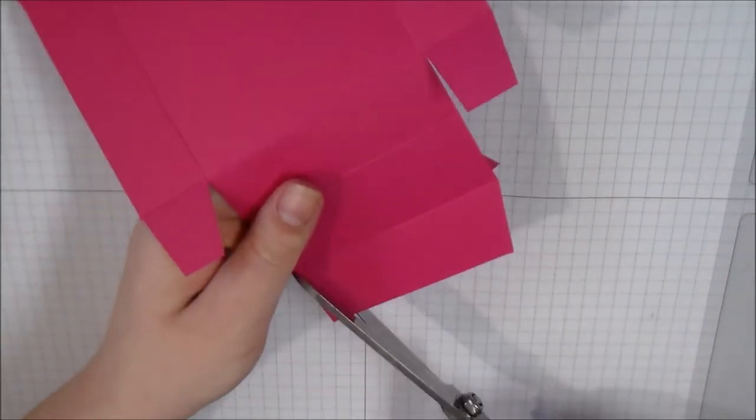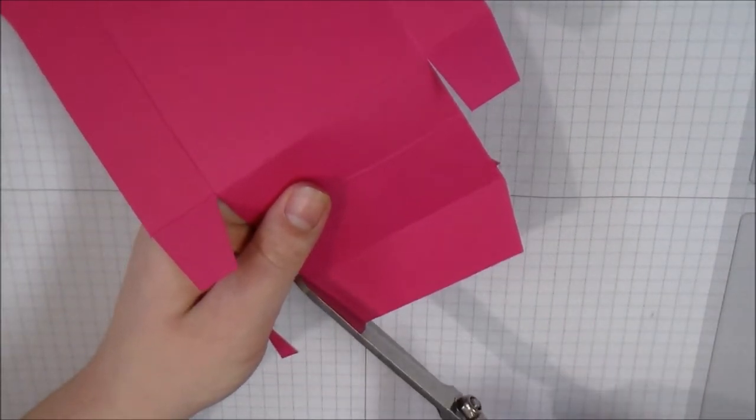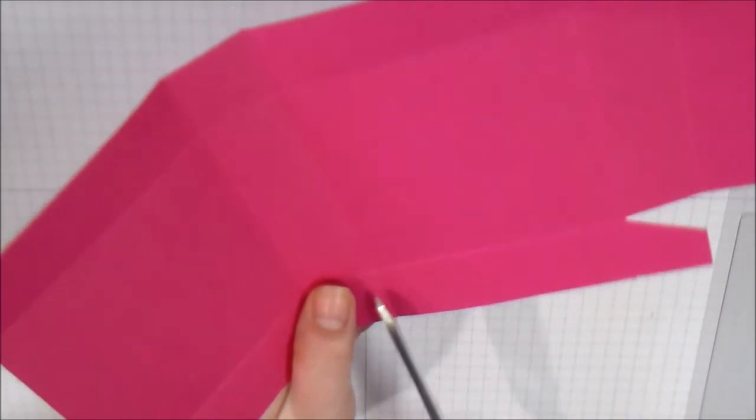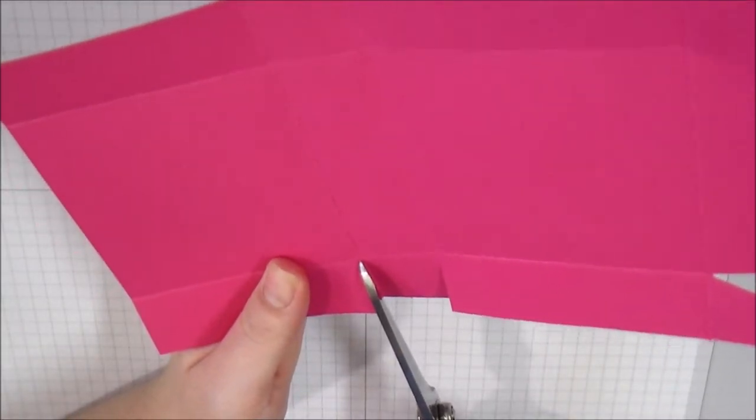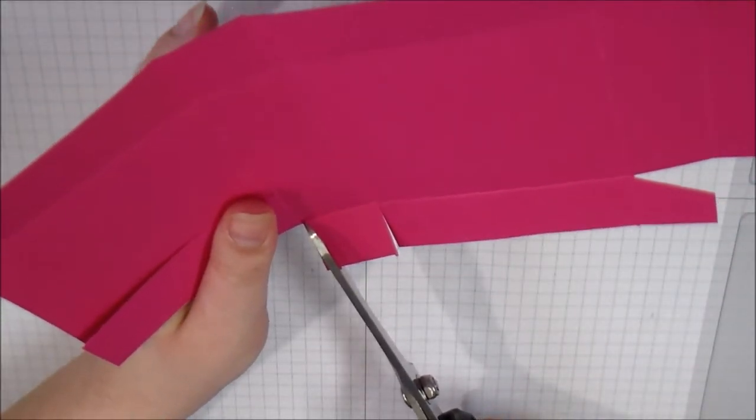Now I'm going to notch in these tabs, and again this is one of those things that just make a prettier, more finished box. And with the little squares we're going to do the exact same thing as far as cutting to that first score line and then notching in.